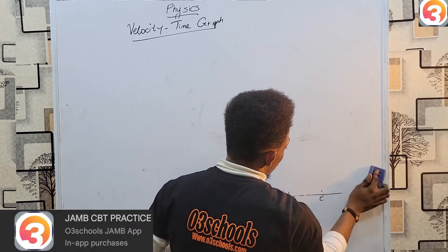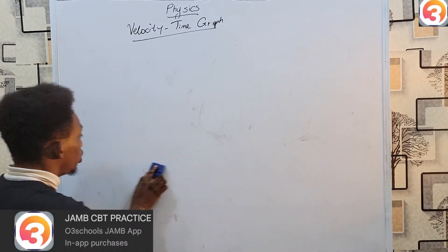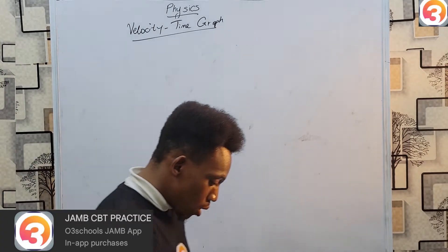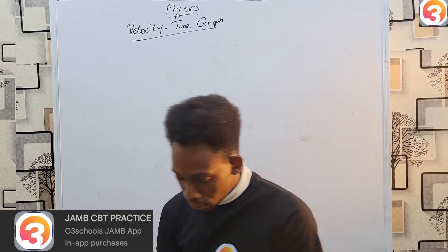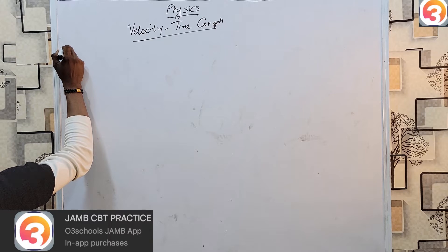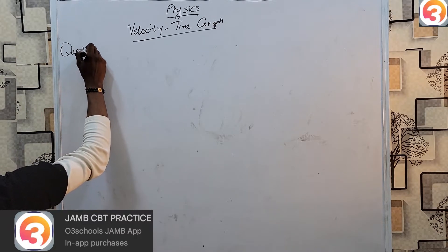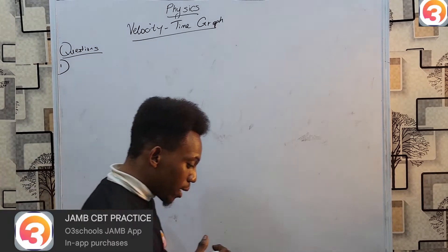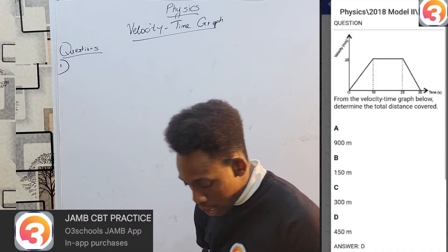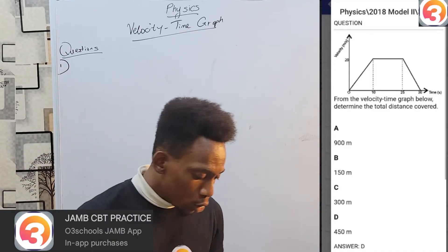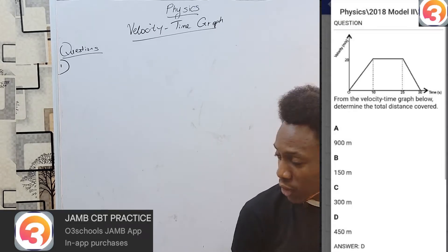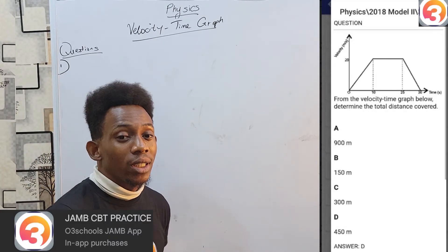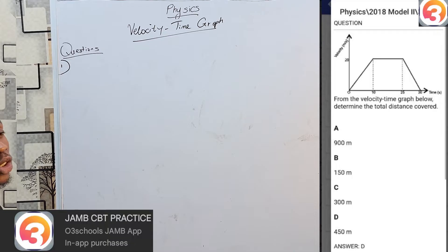Without further ado, let's sink our teeth into some questions, which you shall be able to assess using our O3schools JAMB app. Open our JAMB app. We have our first question for the day. This one comes from the year 2018, model 2, question number 37. We have a graph, which you shall see on your screen or on your app. And we have been told from this graph to determine the total distance covered.